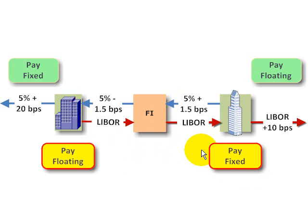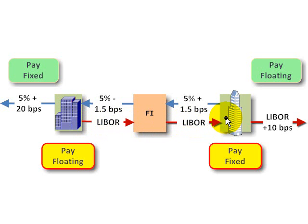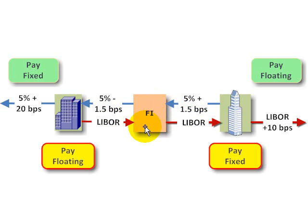So both companies have transformed their interest rate obligation. I used 1.5 basis points here just to illustrate the idea that the financial intermediary — notice the LIBOR can be matched perfectly and passes right through. The 5% received plus 1.5 basis points almost gets passed through, except for the minus 1.5 basis points. So the financial intermediary is getting paid via this spread: in this case 1.5 plus 1.5, meaning the financial intermediary is getting paid 3 basis points on the notional — not much in percentage terms, but on a large notional can be quite a nice paycheck.